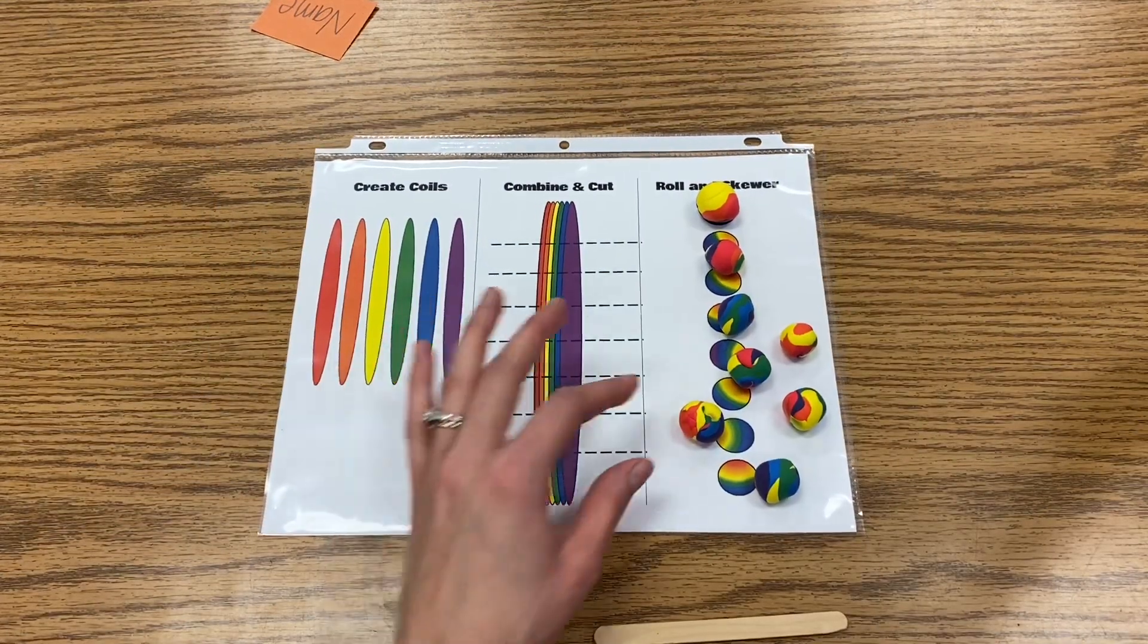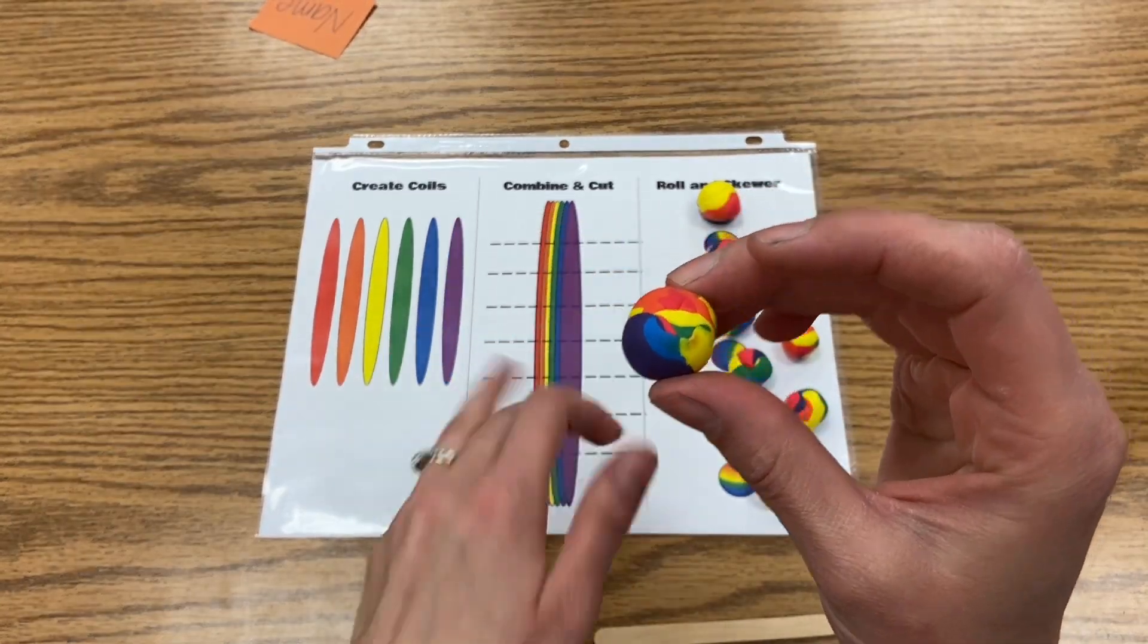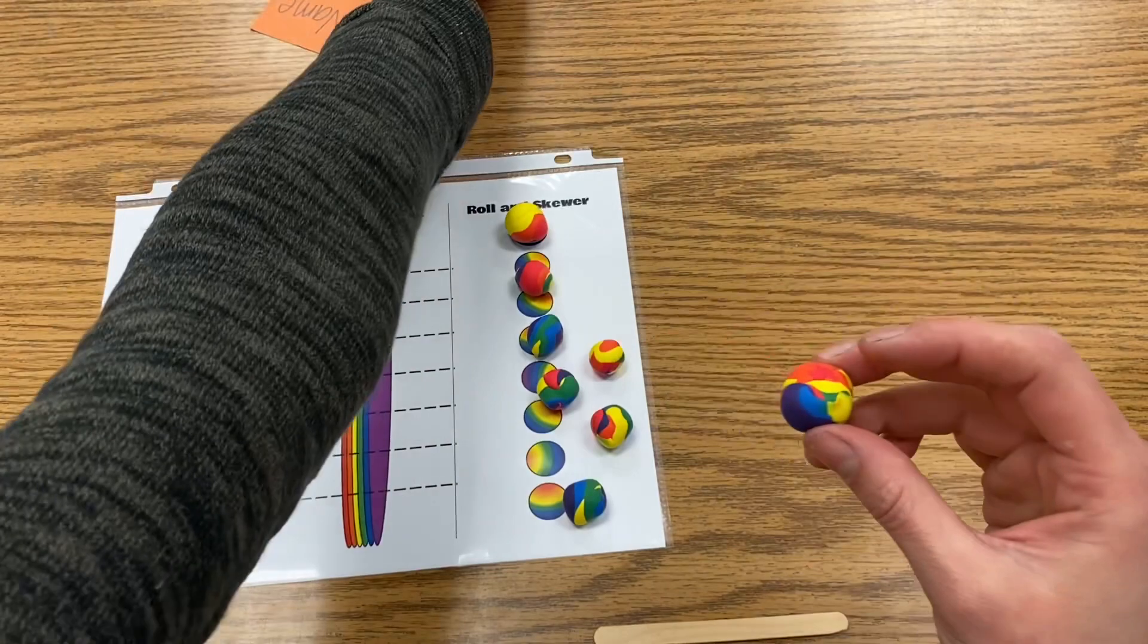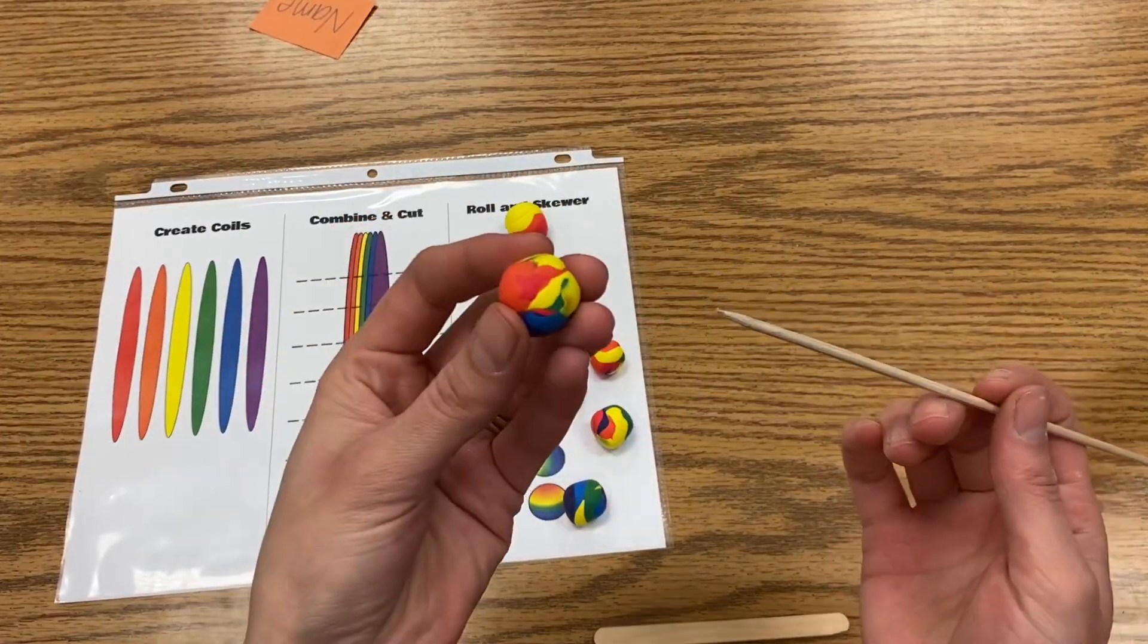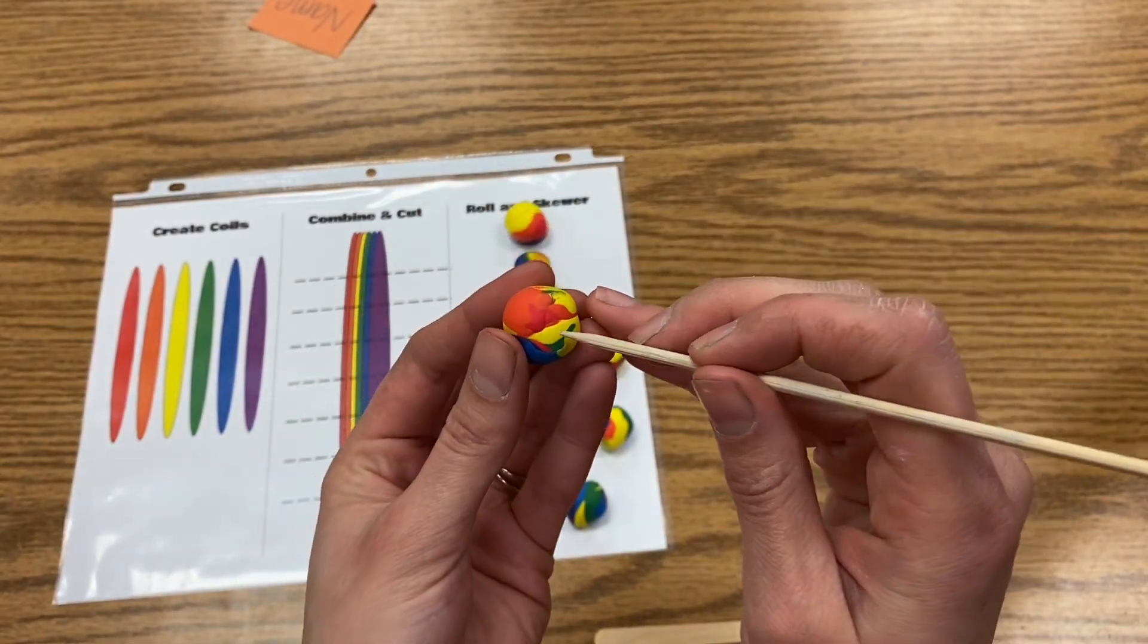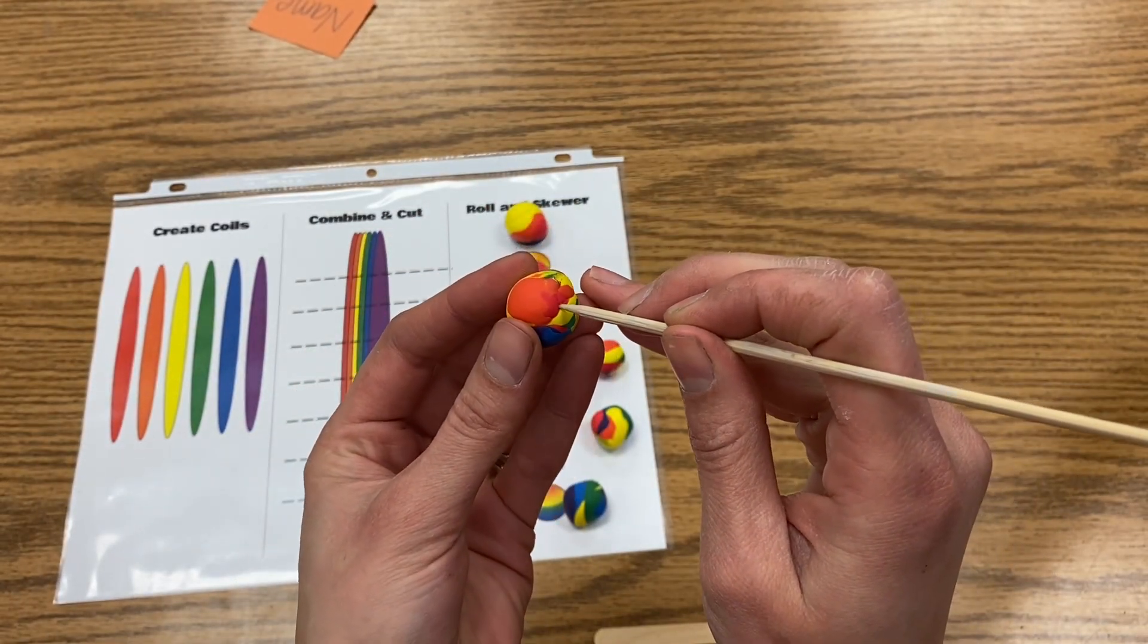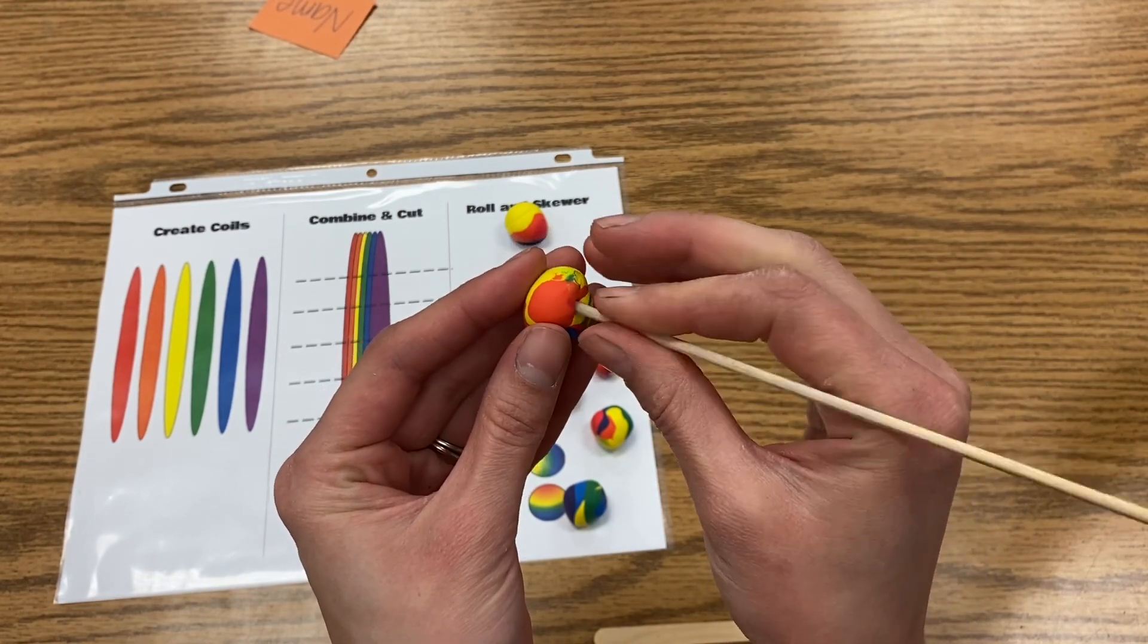Our last step is we want these spheres to become beads. So the thing that's missing right now is a hole in the middle for string to go through. This part can be a little tricky, but you're going to do your best. You are going to take one of your spheres and you're going to take this skewer.